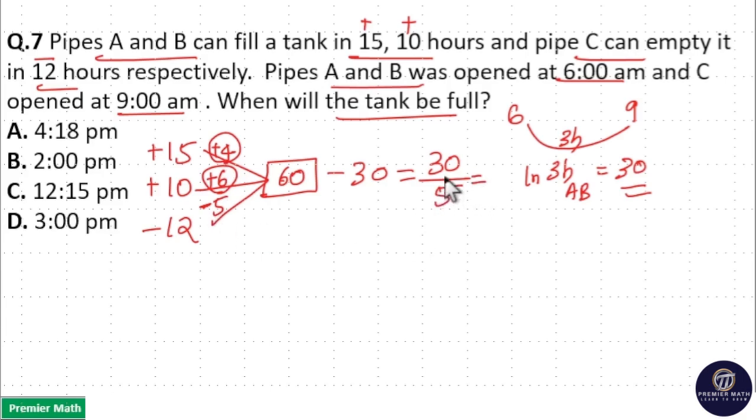Total time taken is 30 divided by 5, which is 6 hours. 6 hours means 9 plus 6 equals 3 pm. A, B, and C started working together at 9 am, so 9 plus 6 hours means at 3 pm all three pipes filled the tank. Option D is your answer.